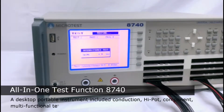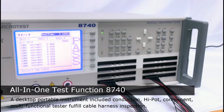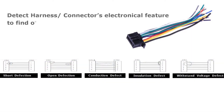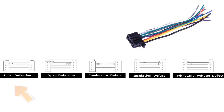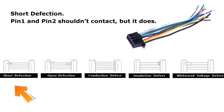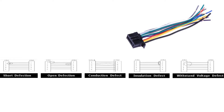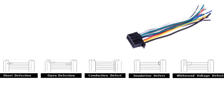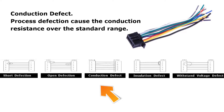You need an all-in-one cable tester — the Microtest 8740 — for basic measurement of harness and connectors. For short detection, pin 1 and pin 2 shouldn't contact but they do. For open detection, pin 1 and pin 2 should be short but they don't. This is a conduction defect.